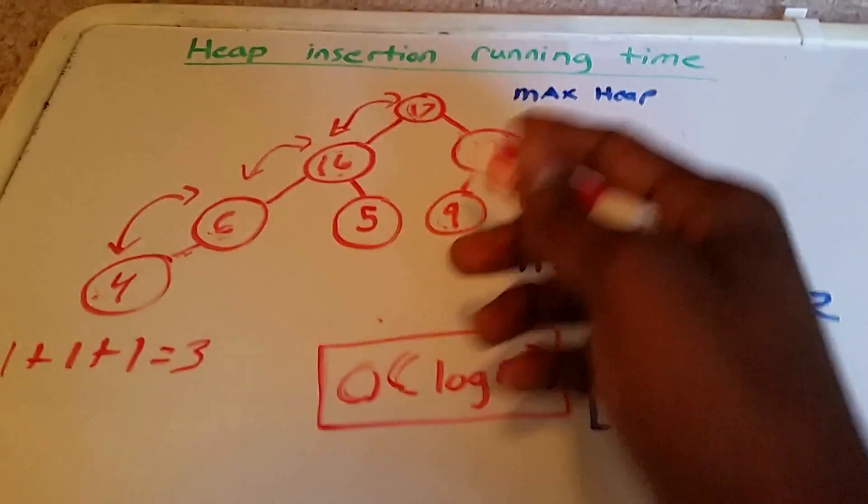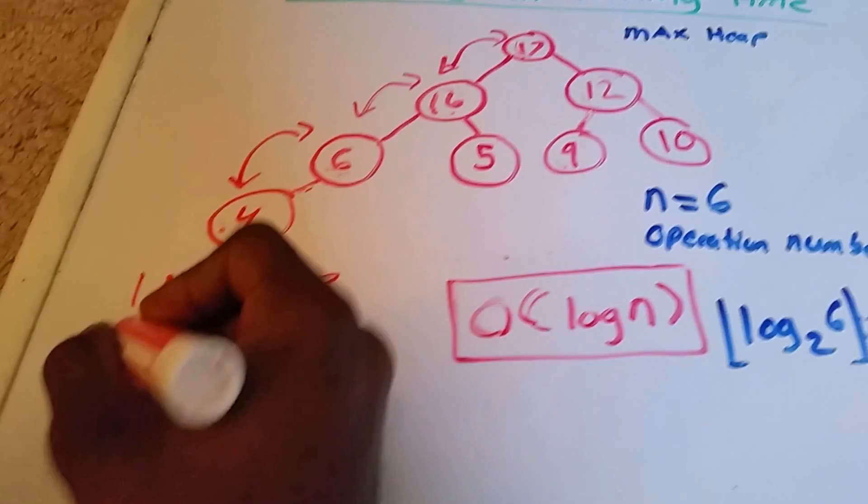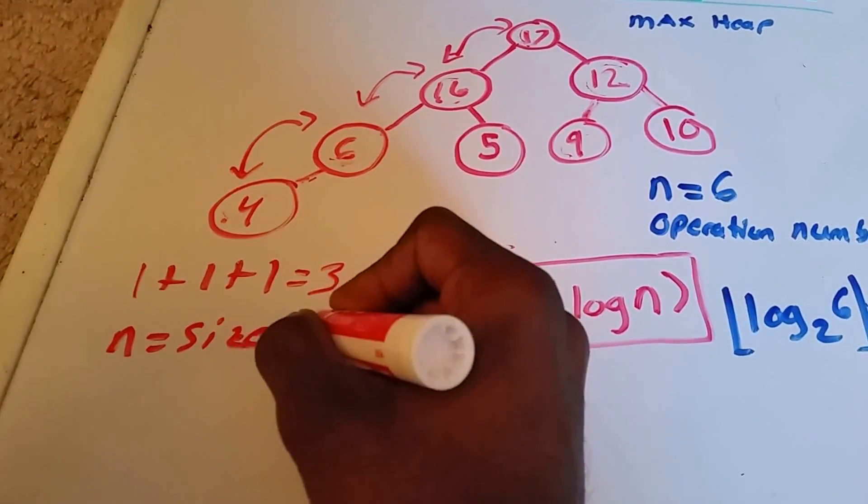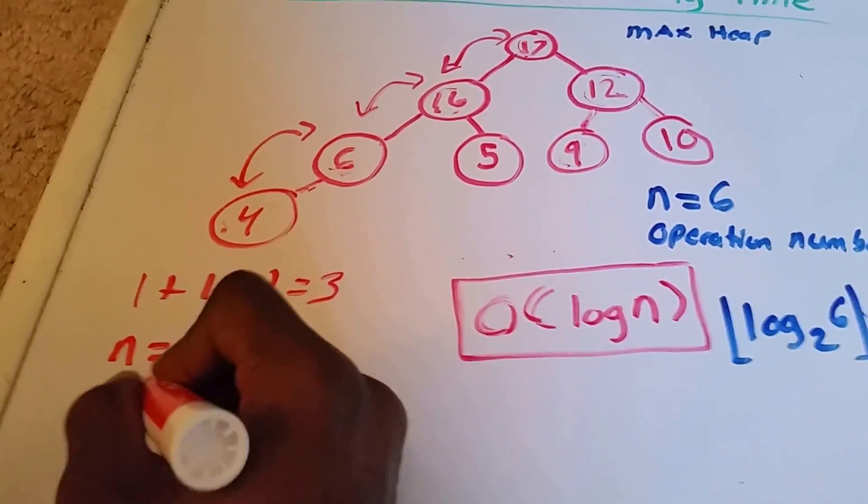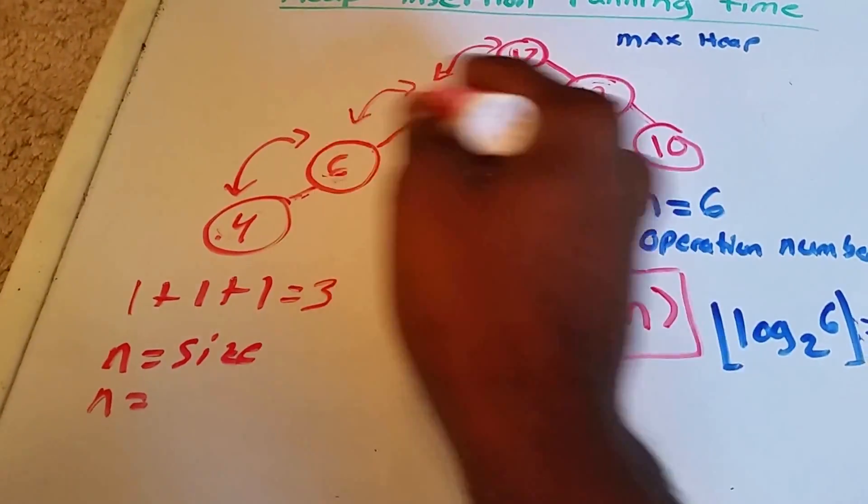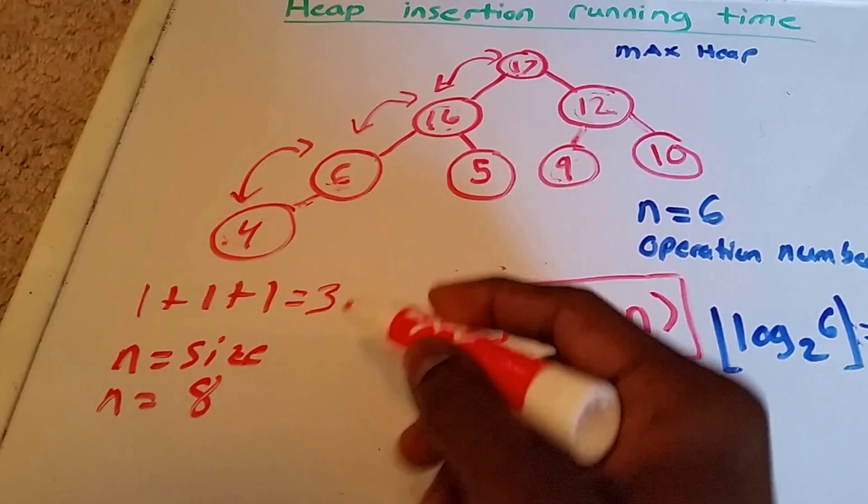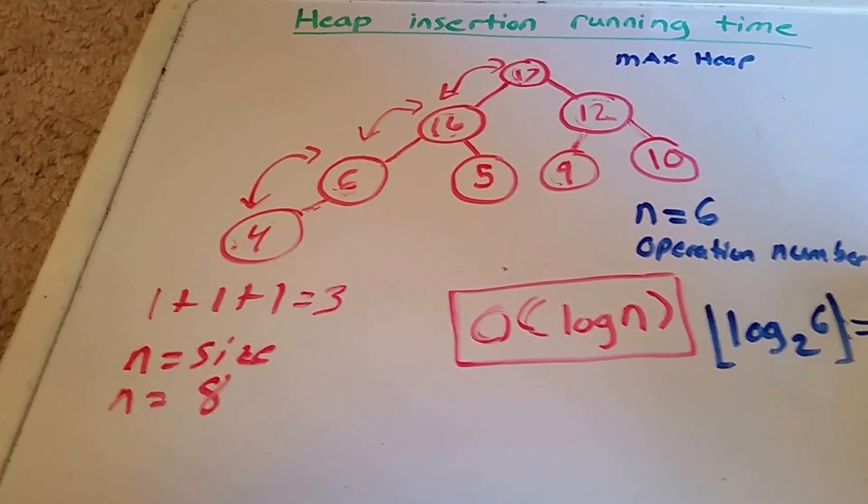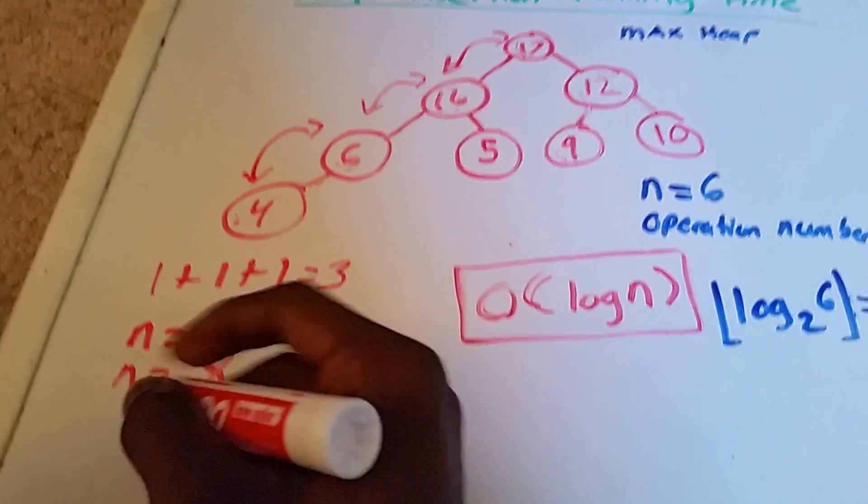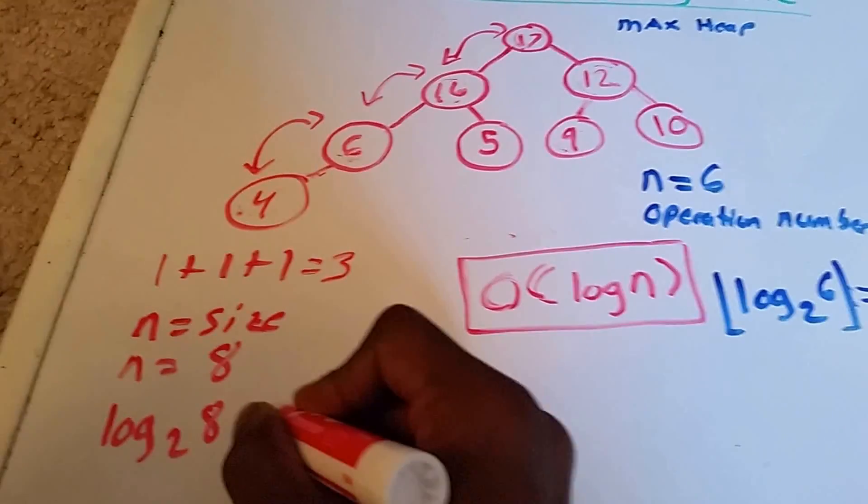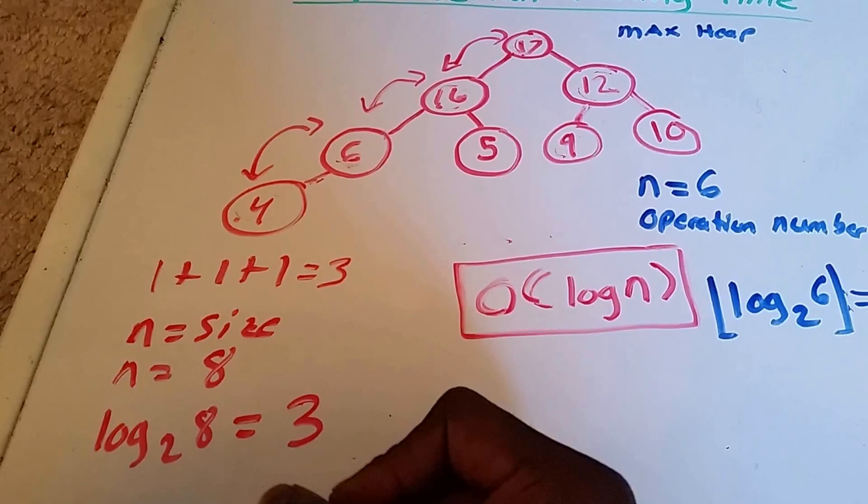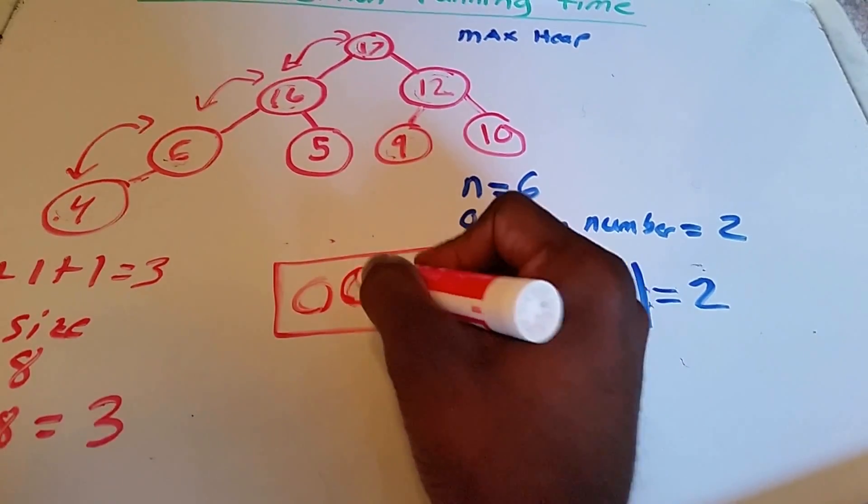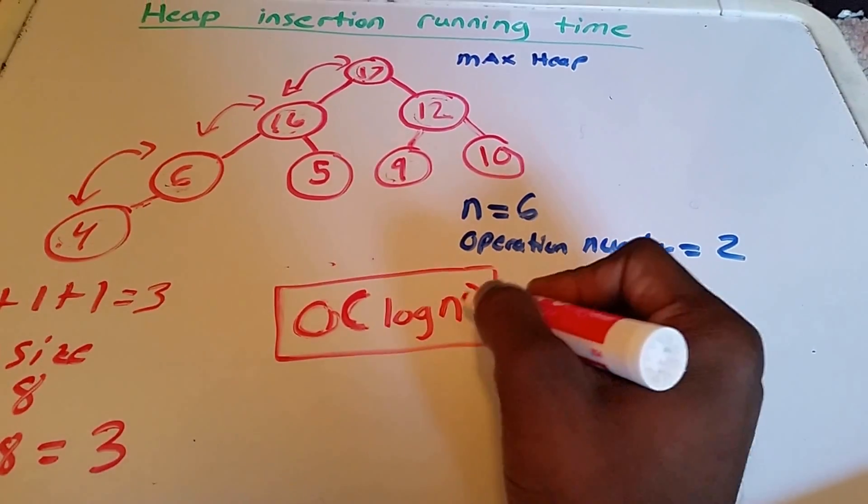And so now what we can see is that with this heap of size 8, so our n equals 1, 2, 3, 4, 5, 6, 7, 8. And the number of operations that it took was log base 2 of 8, which equals 3. So this is why our insertion running time is big O of log n.